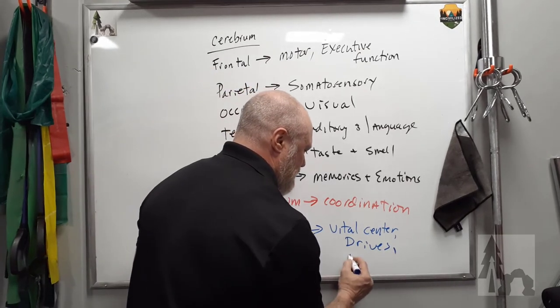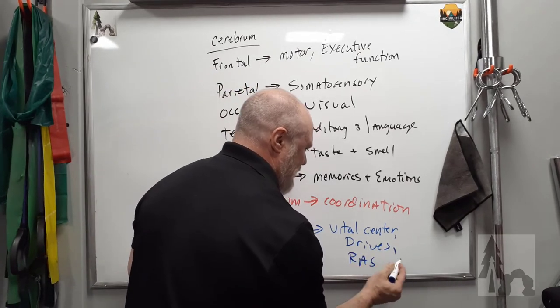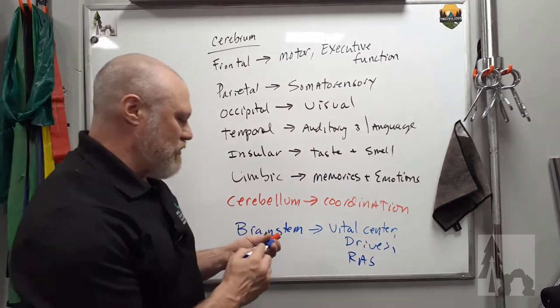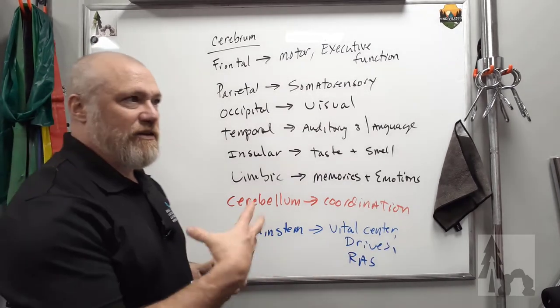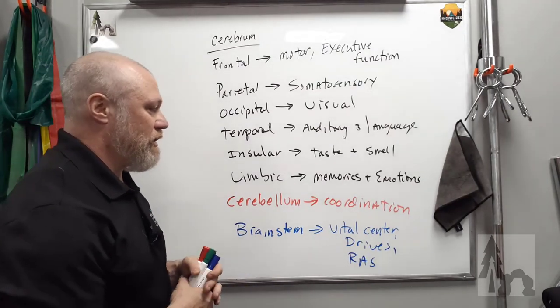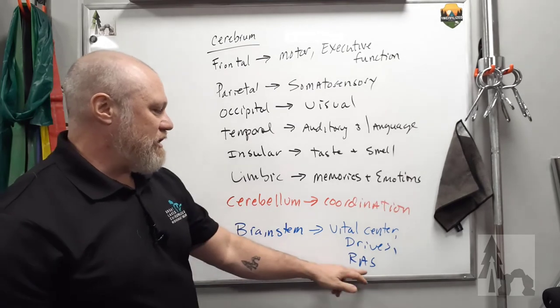And one other kind of structure that we're not really going to get into is the reticular activating system. And this is your arousal center. It's kind of a diffuse network of gray matter, little nuclei or individual neurons at some points.